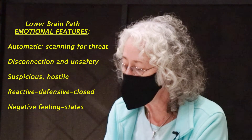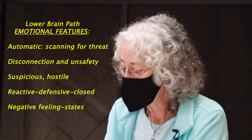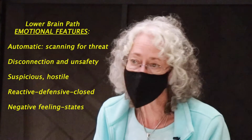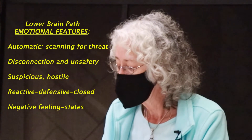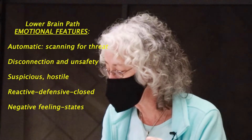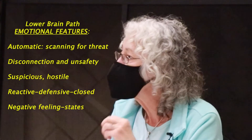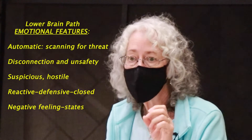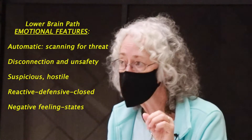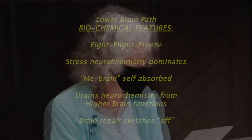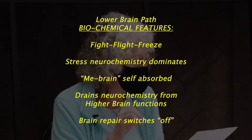Under the emotional features of the lower brain path, it's automatic. It is characterized by a sense of disconnection and unsafety — that's what has the brain going to fight or flight. Emotionally, there tends to be more suspicious feeling, more hostility, more reactive, defensive, closed feeling, and the keyword: negative feeling states. If you find yourself in a negative feeling state a lot, that alone — your mood — is a signal you need to go to the 'be like a friend' and start doing those practices.